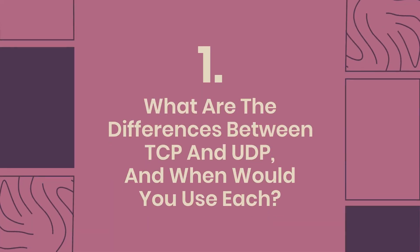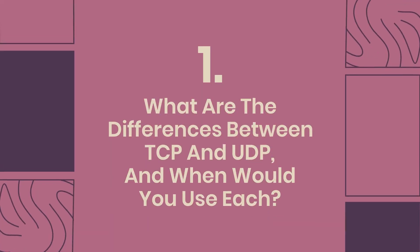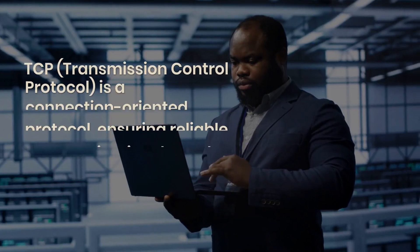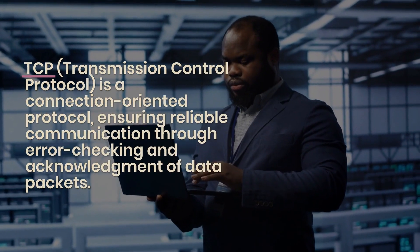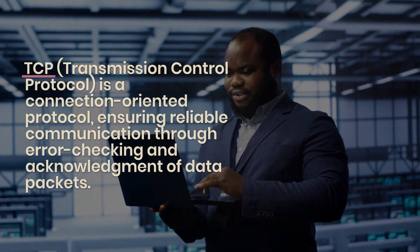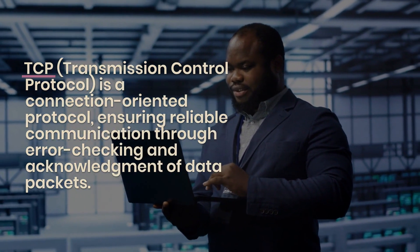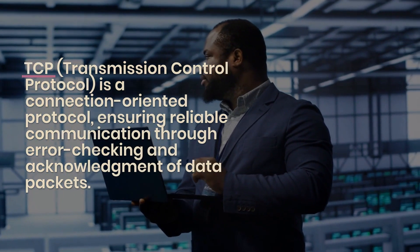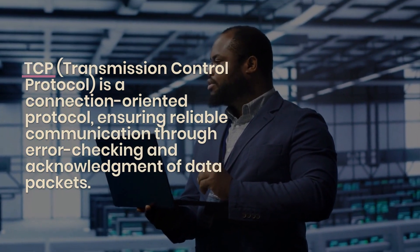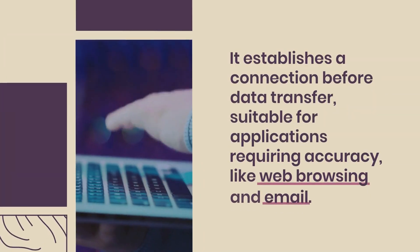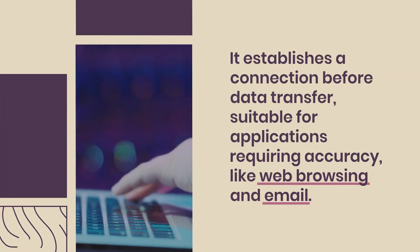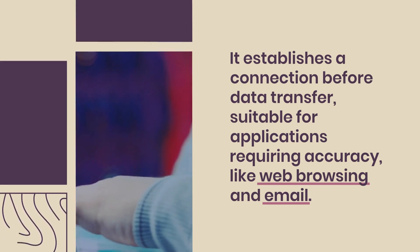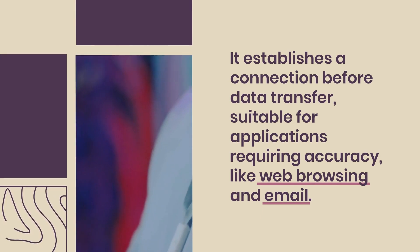Question 1: What are the differences between TCP and UDP, and when would you use each? TCP, Transmission Control Protocol, is a connection-oriented protocol, ensuring reliable communication through error checking and acknowledgement of data packets. It establishes a connection before data transfer, suitable for applications requiring accuracy, like web browsing and email.